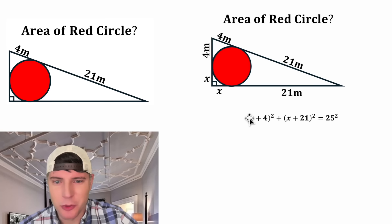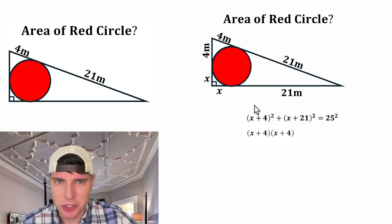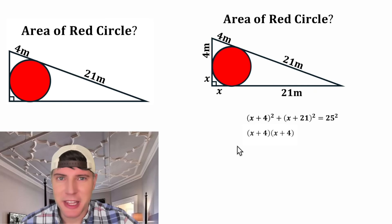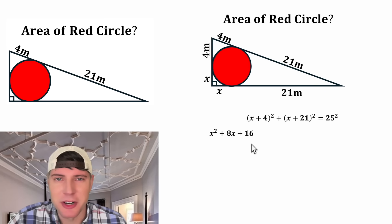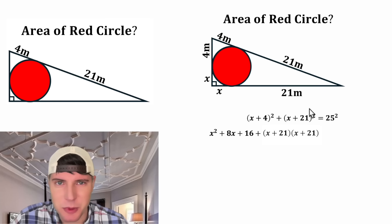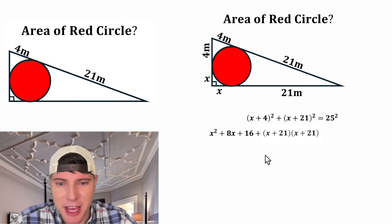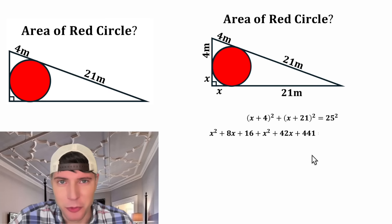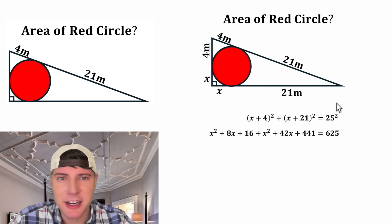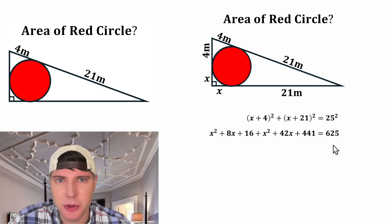Now (x + 4)² is the same as (x + 4)(x + 4). When you multiply that out, we get x² + 8x + 16. And (x + 21)² is the same as (x + 21)(x + 21), which gives x² + 42x + 441. On the right-hand side, 25² equals 625.